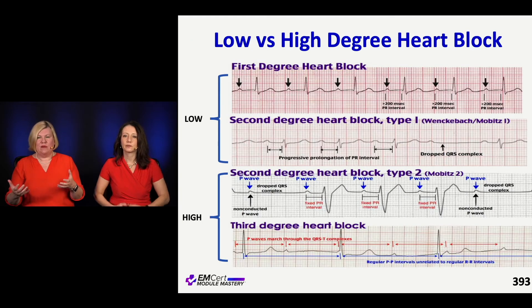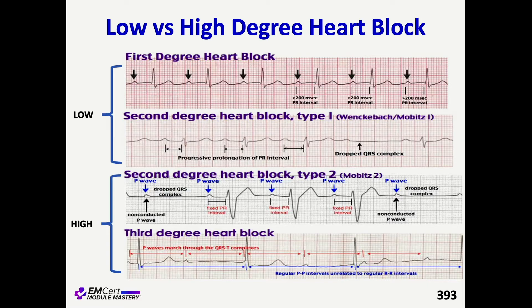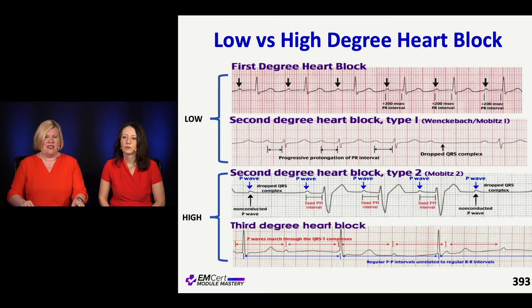Low versus high degree heart block — it's really worrisome versus not so worrisome. First degree heart block: we still see P waves, there's a little extra distance between the P wave and the QRS, but no big deal and no specific treatment. For second degree, type 1 has P waves progressively marching out and then dropping one — not as big a deal. Type 2 has a fixed rate between P wave and QRS but drops beats unpredictably — that's a harbinger of badness. And third degree is obviously a big deal when the P's and QRSs aren't talking to each other at all.